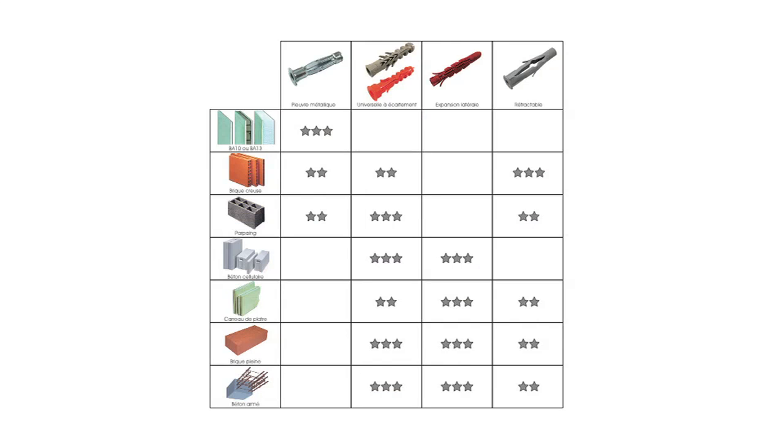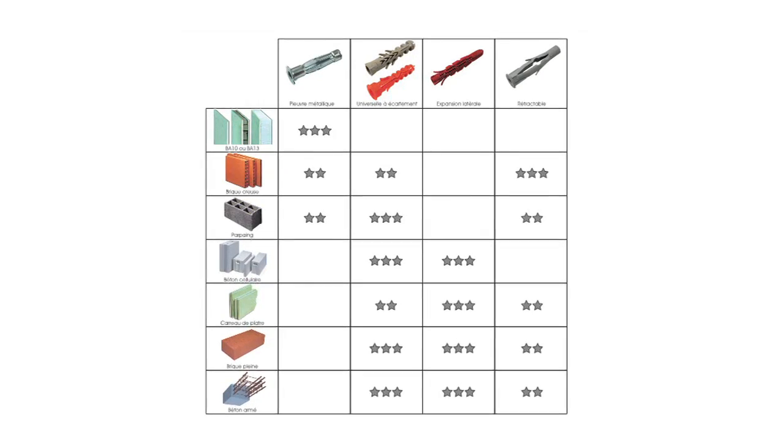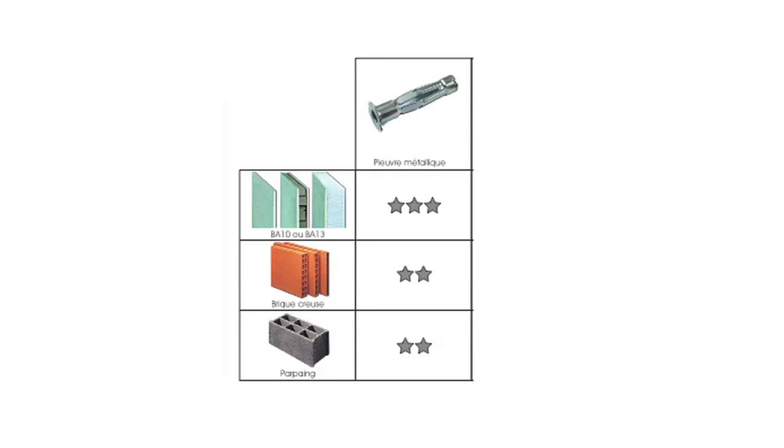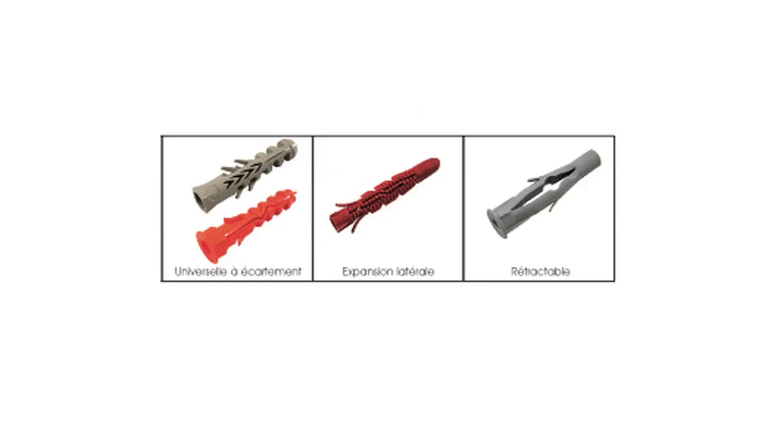The type of wall to which the piece will be attached will determine the kind of screws required. For example, you will need to use hollow wall anchors in the case of plasterboard partitions, while expansion screws will be needed for solid or cellular materials.